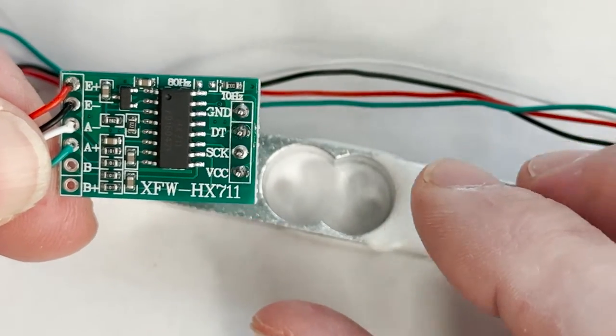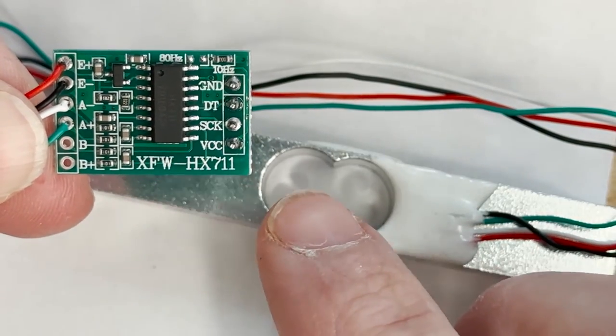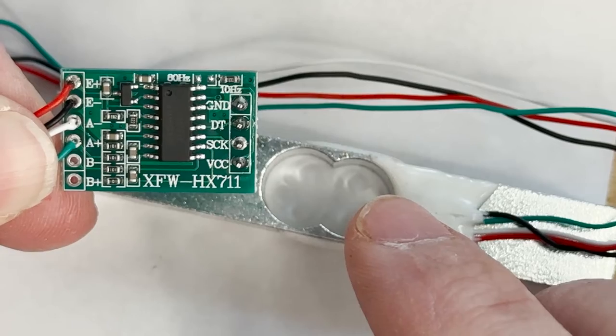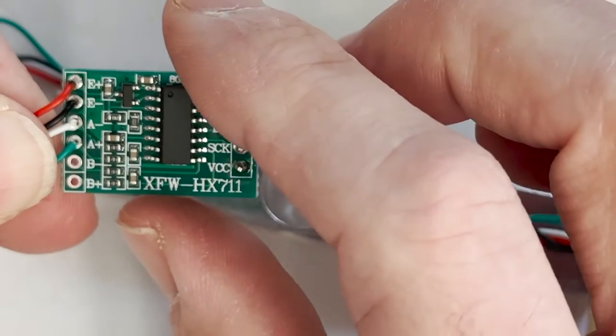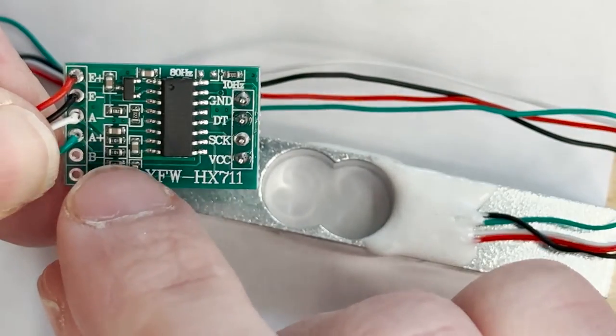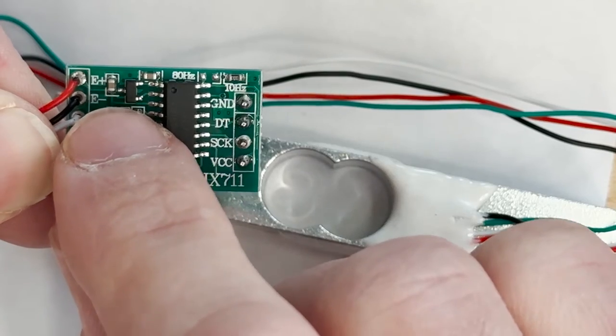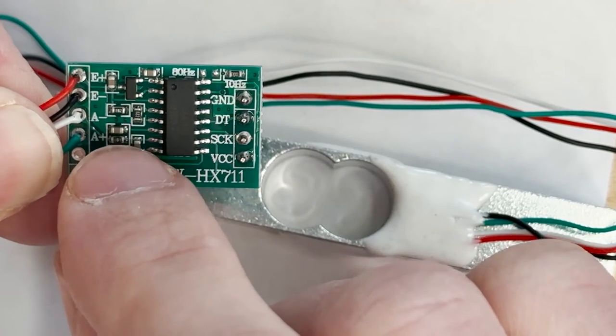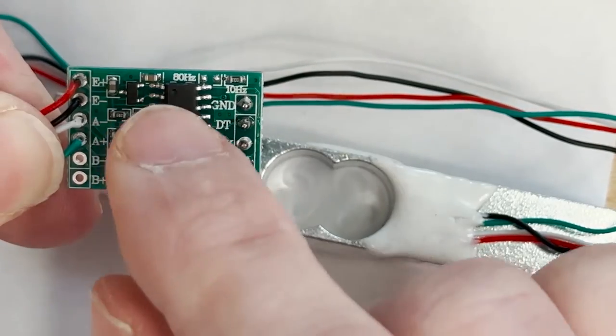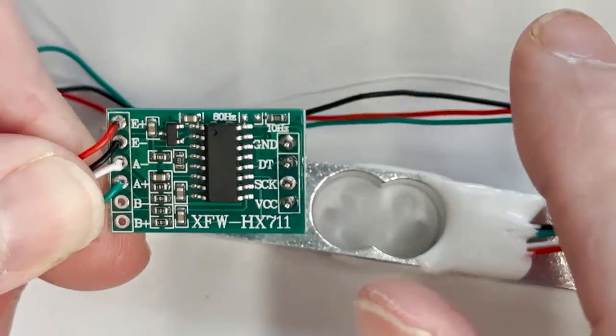So this is the HX711 board here. The ones that are connected up to the strain gauge are E plus, E minus, A minus, and A plus. So we have those connected here.